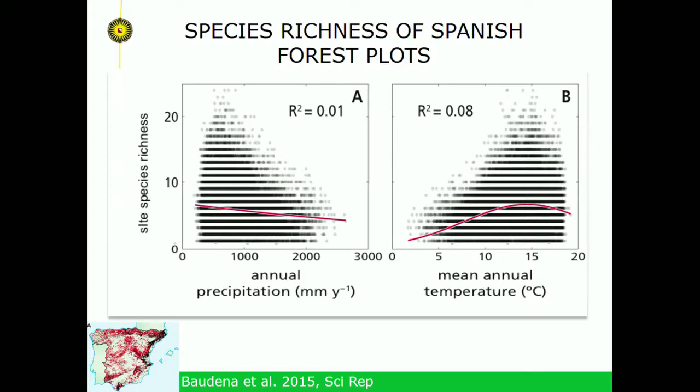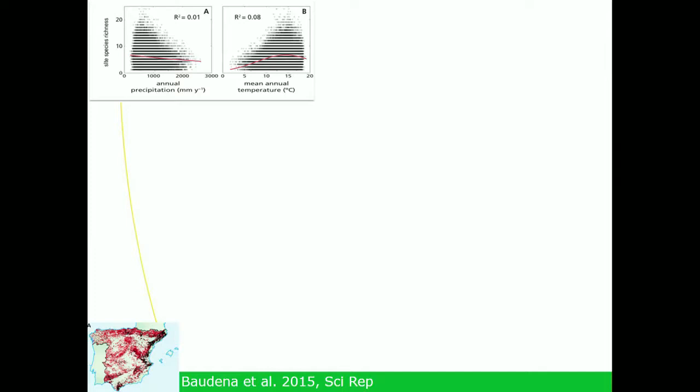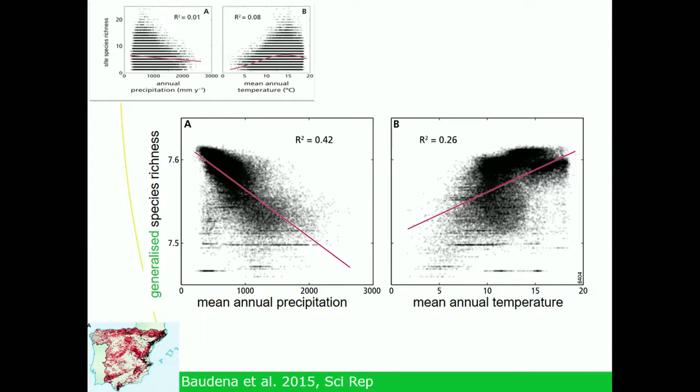When we apply the method of reflections, the generalized species richness decreases with mean annual precipitation — with more than 40% of variance explained by one variable alone — and increases with mean annual temperature, with about 25% variance explained. The potentially most species-rich sites are dry and hot, corresponding to species-rich shrublands in the south of Spain.